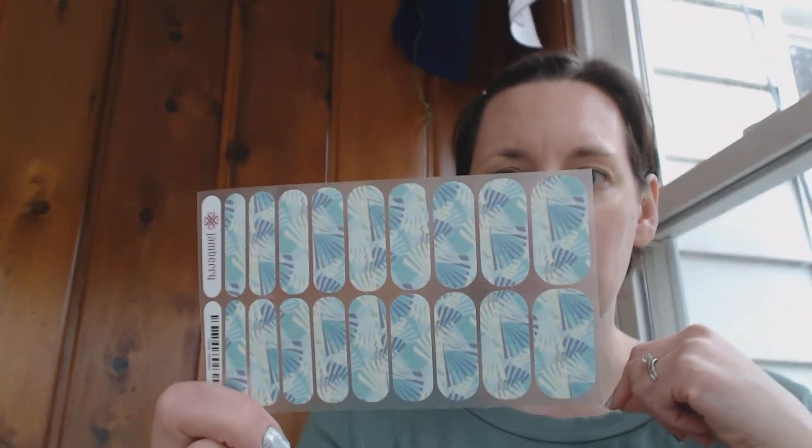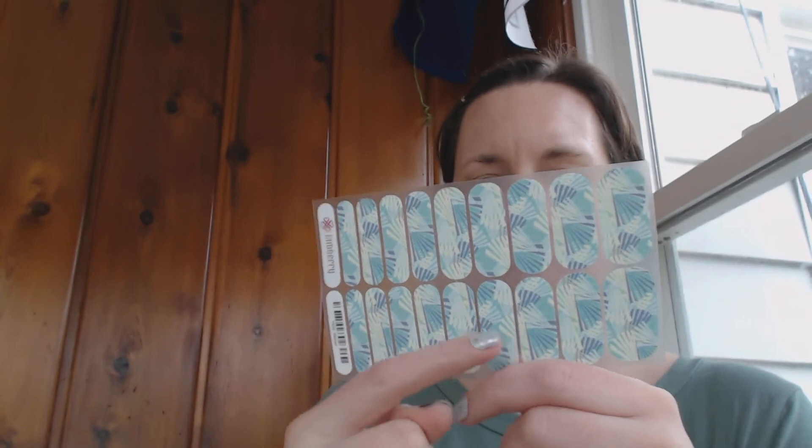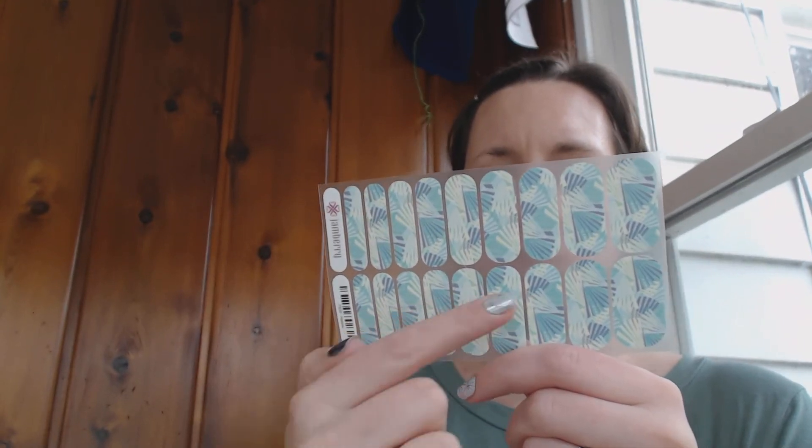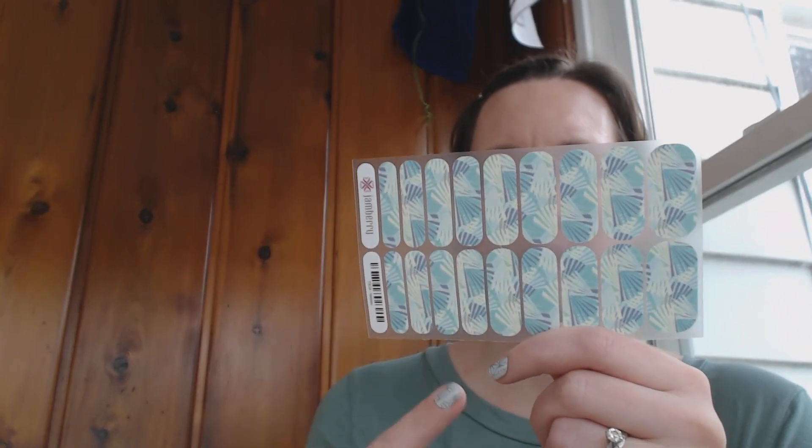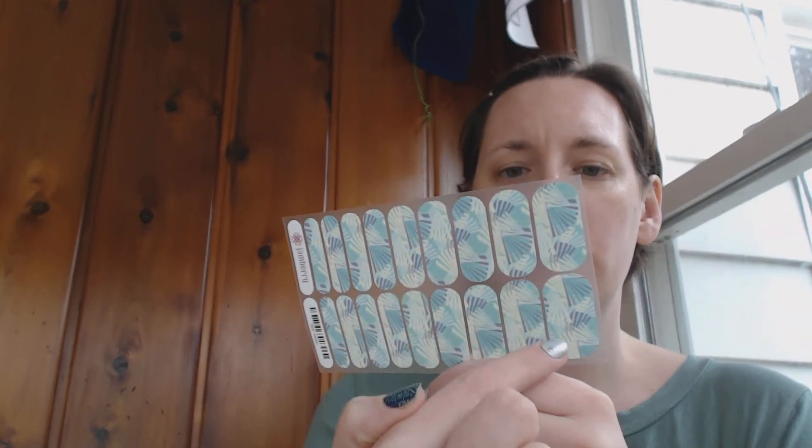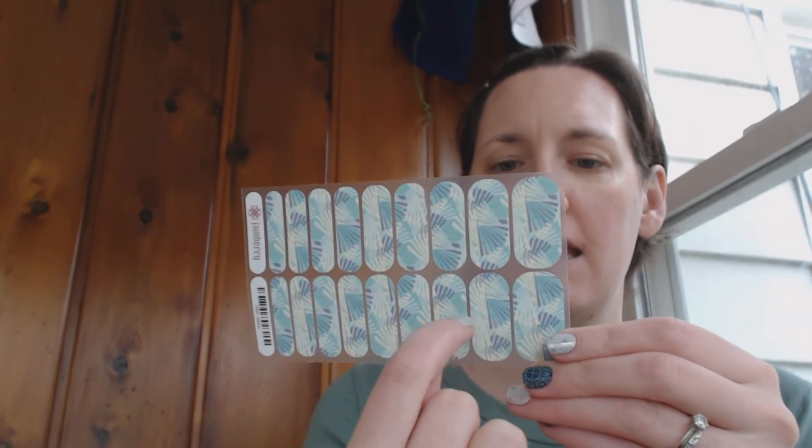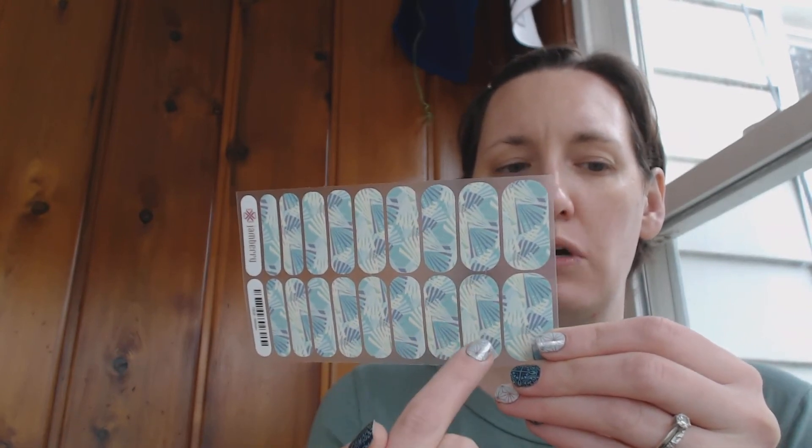Let me explain what you can get out of one sheet. You can get two full manicures because each wrap is cut in half per finger, and two full pedicures. I cut it in half for my large toes.